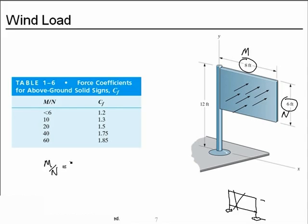So, M over N is 8 feet over 6 feet, 1.3, which is definitely below 6. So, in our case, we use a CF of 1.2.